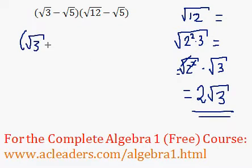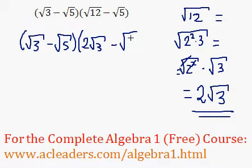Now let's get started. We get root 3 minus root 5 times 2 root 3 minus root 5. Now we can FOIL the expression.